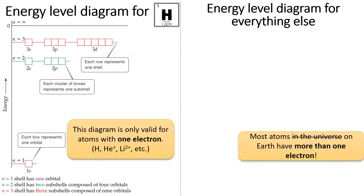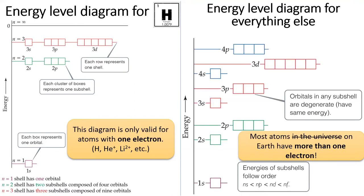As soon as we add a second electron, the electrons are interacting with each other and it shifts the energies of these orbitals around. So forget that old energy level diagram to the left. This is the true energy level diagram of the elements.